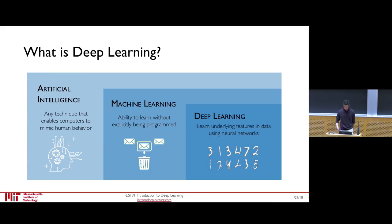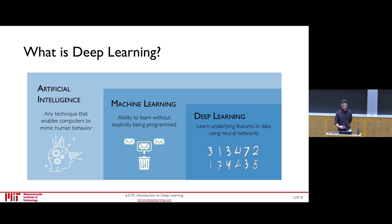Let's start with this notion of intelligence. At a very high level, intelligence is the ability to process information such that it can be used to inform future predictions and decisions. When this intelligence is not engineered but rather a biological inspiration such as in humans, it's called human intelligence, but when it's engineered we refer to it as artificial intelligence.